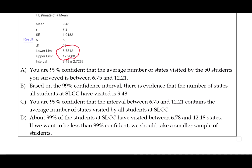Let's look at these possible answers. Answer A: You are 99% confident that the average number of states visited by the 50 students you surveyed is between 6.75 and 12.21. There are a couple things wrong with this. It talks about how confident we are in the parameter, but we need to talk about how confident we are that the interval captures the parameter. The parameter is a value that exists and we wish we knew about it, but we're estimating it using a confidence interval. So we want to talk about our confidence in the confidence interval, not in the parameter.